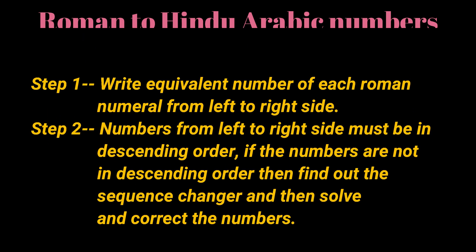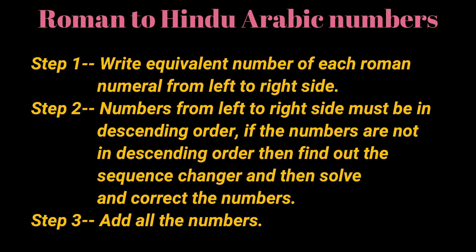To convert Roman numerals into Hindu-Arabic numbers, we are going to follow three steps. Step 1: Write down the equivalent number of each Roman numeral from left to right. Step 2: Numbers from left to right must be in descending order. If not, find the sequence changer and correct the numbers. Step 3: Add all the numbers.